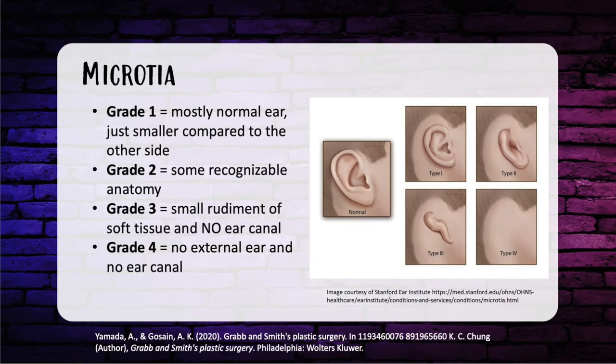Moving on to microtia — it's an ear deformity ranging from a hypoplastic ear to a completely absent ear. There are four grades. In grade one, you have a mostly normal ear that is just smaller. In grade two, you have some recognizable anatomy. In grade three, you have a small rudiment of soft tissue and no ear canal — the absence of an ear canal is what distinguishes grade three from grade two. In grade four, there is absolutely no external ear and no ear canal. Microtia is most commonly unilateral, seen in males, and affects the right ear.